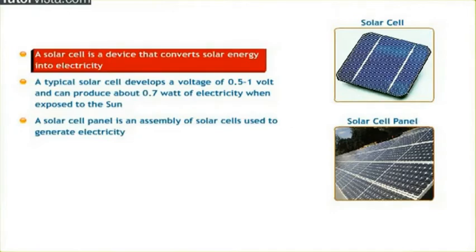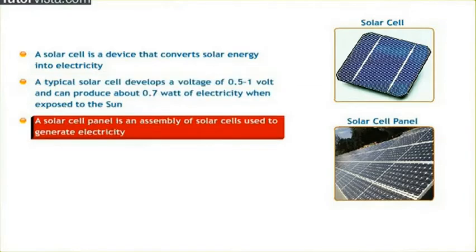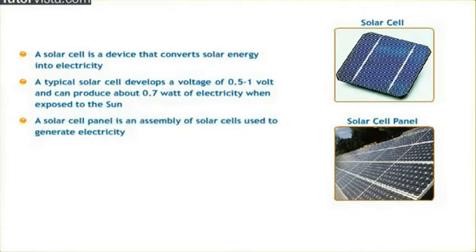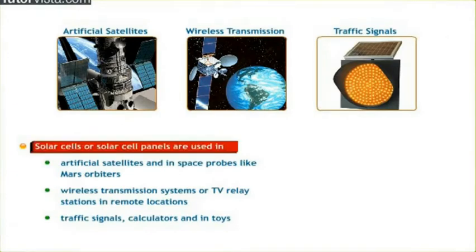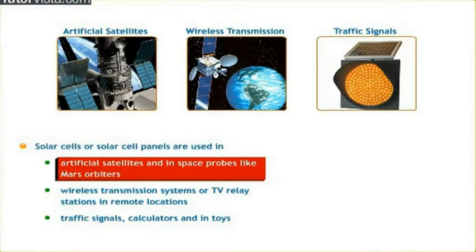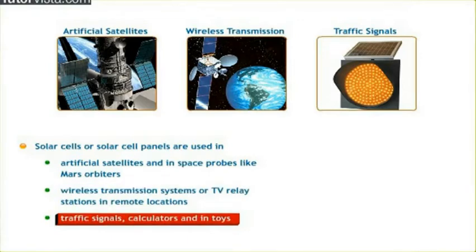A solar cell is a device that converts solar energy into electricity. A typical solar cell develops a voltage of 0.5 to 1 volts and can produce about 0.7 watt of electricity when exposed to the sun. A solar cell panel is an assembly of solar cells used to generate electricity. Solar cells or solar cell panels are used in artificial satellites and in space probes like Mars orbiters, wireless transmission systems or TV relay stations in remote locations, traffic signals, calculators and in toys.